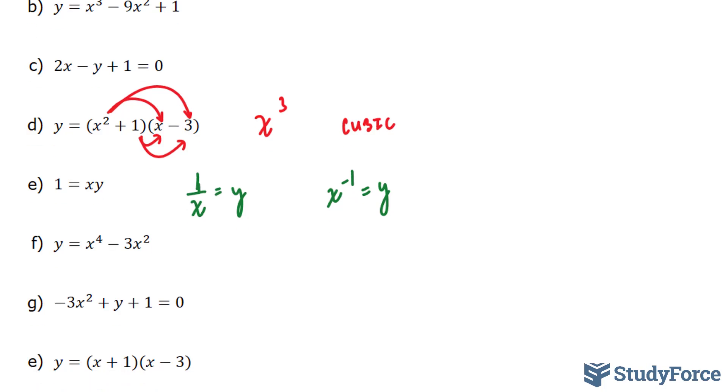Moving on to f. We have y is equal to x to the power of 4 minus 3x to the power of 2. Here we have x to the power of 4. x to the power of 4 is neither linear, quadratic, or cubic. So this would be neither as well.